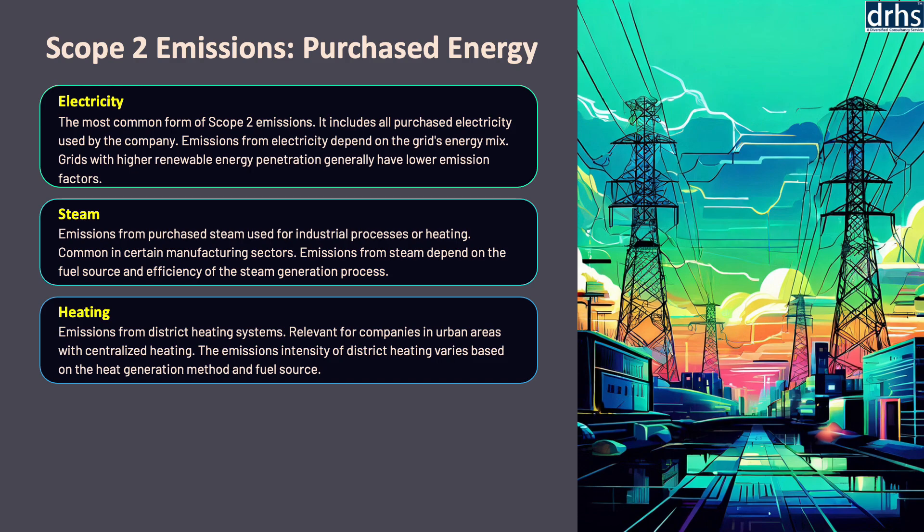The U.S. Environmental Protection Agency suggests that companies explore such alternatives to reduce their scope 2 heating emissions. The International Energy Agency highlights that district heating systems can provide an efficient and flexible option to decarbonize the heating sector.